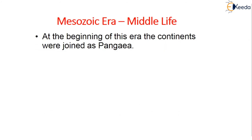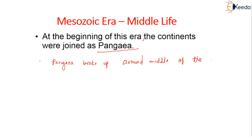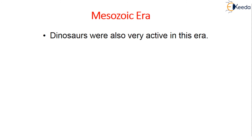The Mesozoic era means 'middle life.' At the beginning of this era, the continents were joined as Pangea. Pangea broke up around the middle of this era, after which reptiles became the most abundant animals due to their ability to adapt to the drier climate. Reptiles could live both on land and in water, and their skin helped maintain body fluids while embryos lived in shells.